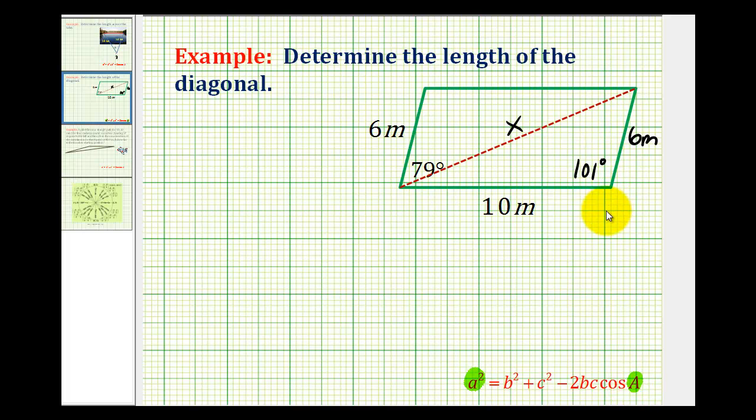So if we're going to use this angle, this would be angle A, this would be side A, and then the two sides that form angle A would be B and C in no particular order.